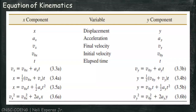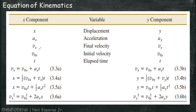Here are the equations of kinematics for constant acceleration in two-dimensional motion. For the x-component: position is x, acceleration is ax, final velocity is vx, initial velocity is v0x, and elapsed time is t. Here are the four motion equations with constant acceleration.